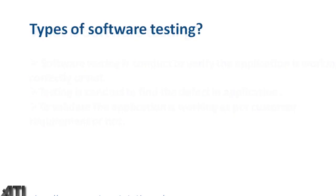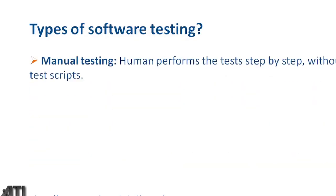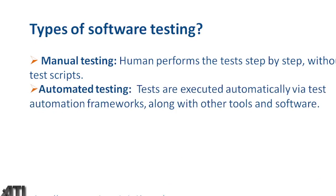The types of software testing include manual testing, where a human performs test steps by step without test scripts, and automated testing, where tests are executed automatically via test automation frameworks using different tools. Examples of automation tools include Selenium, UFT, TestComplete, Tosca, and Katalon Studio. Whenever we test an application using any automation tool, that is called automation testing.